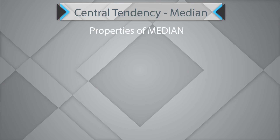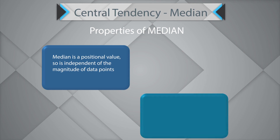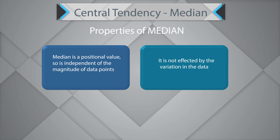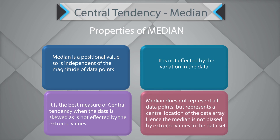Properties of the median: median is a positional value, so it is independent of the magnitude of the data points. It is not affected by variation in the data. It is the best measure of central tendency when the data is skewed, as it is not affected by extreme values. Median does not represent all data points but represents the central location of the data array, and hence it is not biased by extreme values.